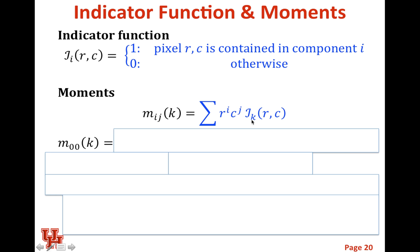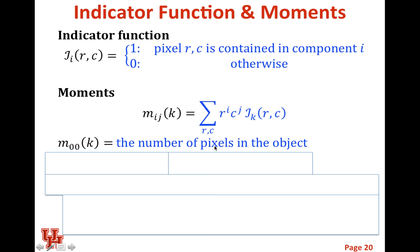That's a lot of data, but there are some low-order moments that are actually very useful. One of the most useful ones is the zeroth order moment. That's going to take r to the zero, which is one for everything, and c to the zero. So all you're doing is summing up how many pixels are inside component k — it's just the number of pixels in the object. This tells us what is the mass, or equivalently the area, of the object.